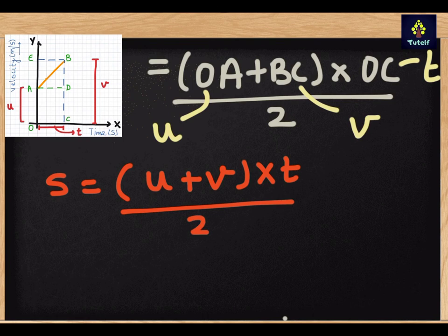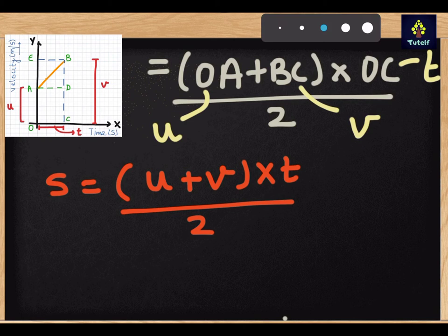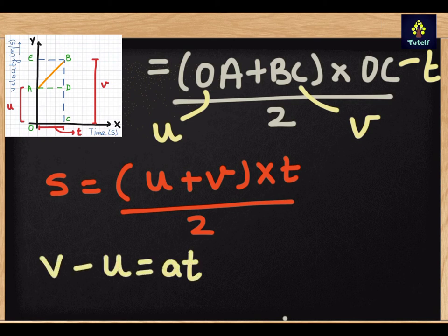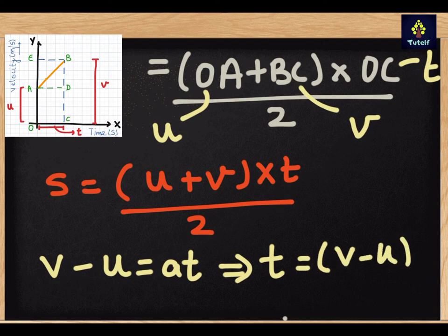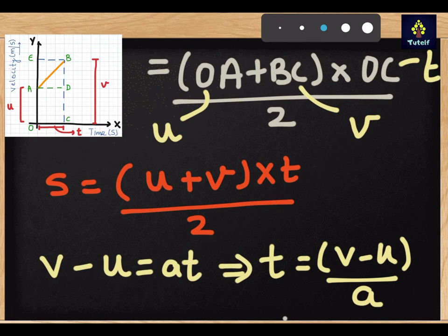Now from the first equation from the velocity time relation I already know that V minus U is equal to AT. That means I can put T as V minus U divided by A. So what I will do is I will replace this T that I have here with this.